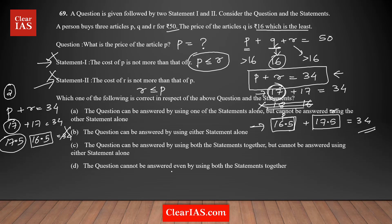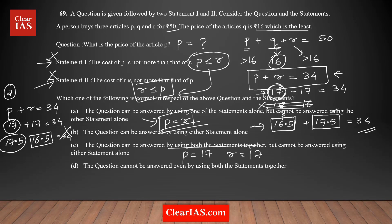The next step is to combine both statements, since individually neither is sufficient. Statement 1 gives P ≤ R, and statement 2 gives R ≤ P. Both conditions are true simultaneously only if P equals R. That means if you combine the statements, P and R must be equal. Since P plus R equals 34, we get P equals 17 and R equals 17 — the only possible values. You get a unique answer for P, so the answer is option C: you need to combine both statements, and it cannot be answered using either statement alone.